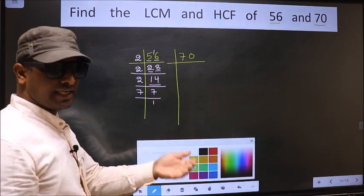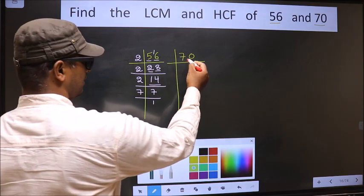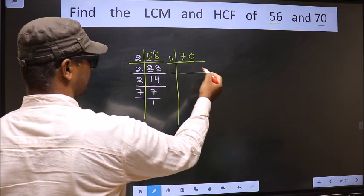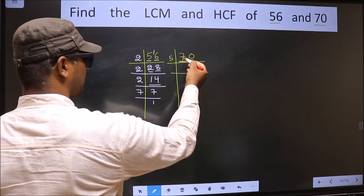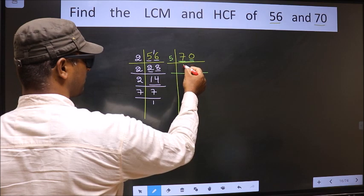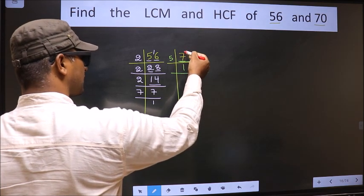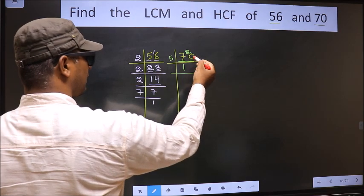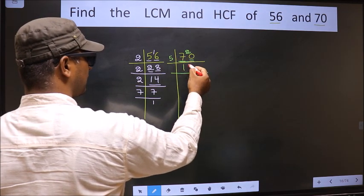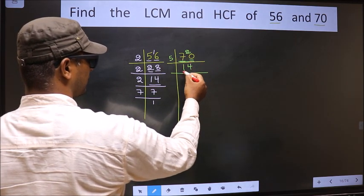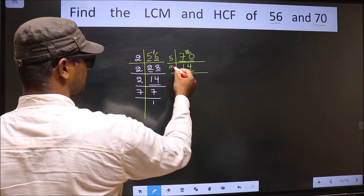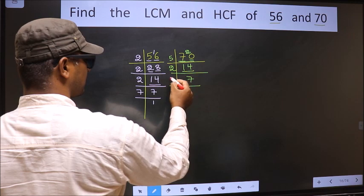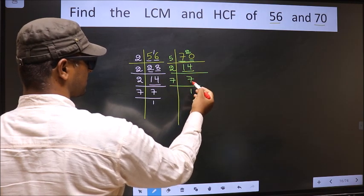Now the other number, 70. Last digit is 0, so we take 5 here. The first number 7, a number close to 7 in the 5 table is 5. 7 minus 5 is 2, carried forward making it 20. When do we get 20 in the 5 table? 5 times 4 is 20. Now here we have 14. 14 is 2 times 7. Now we have 7. 7 is a prime number, so 7 times 1 is 7.